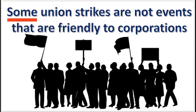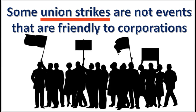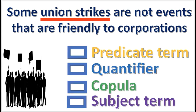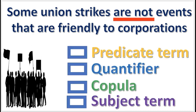Next practice problem. In this categorical proposition, what is the word 'some' called? The answer will appear in 3, 2, 1. The quantifier. Next, what is 'union strikes' called? The answer in 3, 2, 1. That's correct — the subject term. Next, what is the word 'are not' called? The answer in 3, 2, 1. Correct — the copula.